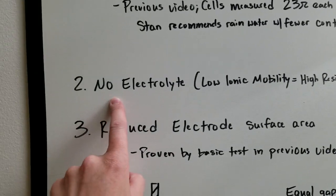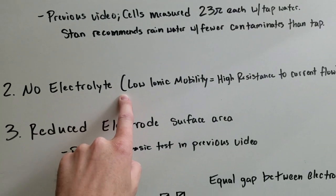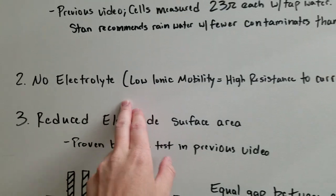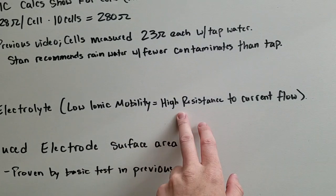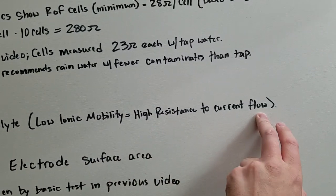Number two, Stan didn't use electrolyte. He mentioned this numerous times. Without electrolyte, you have a low ionic mobility, which essentially means you have a higher resistance to current flow.